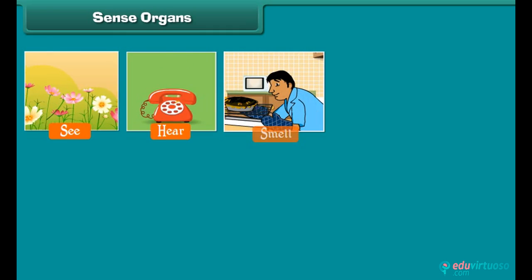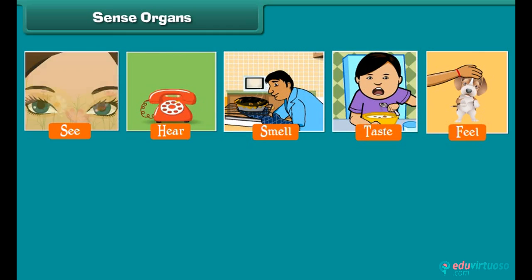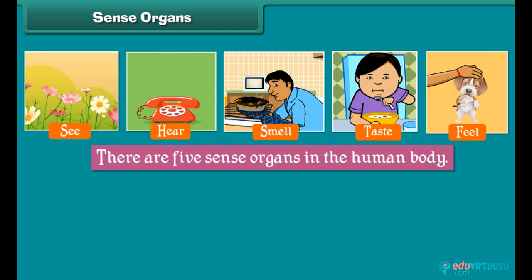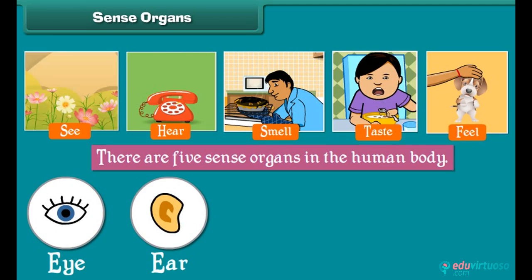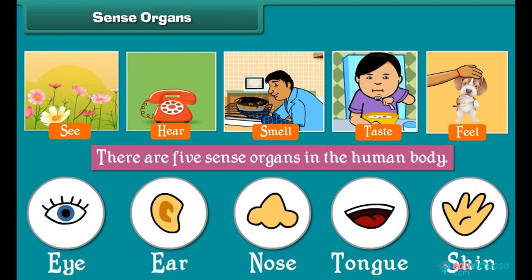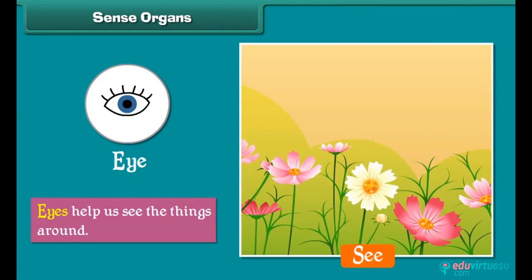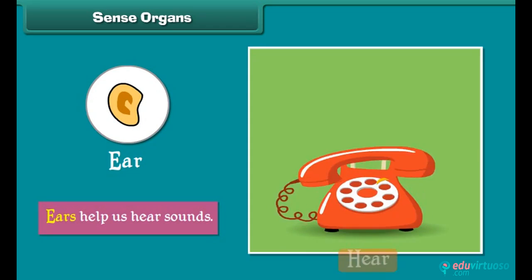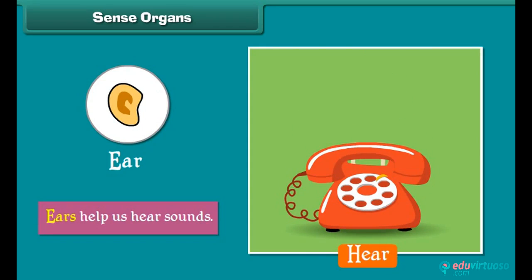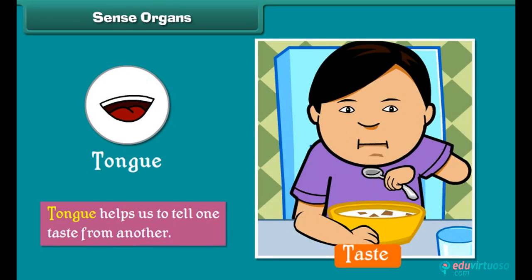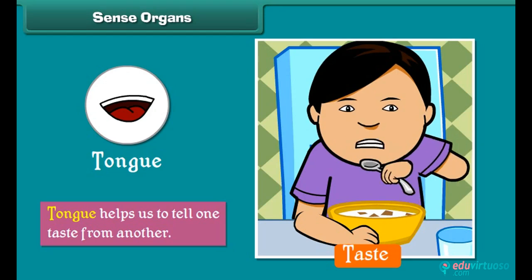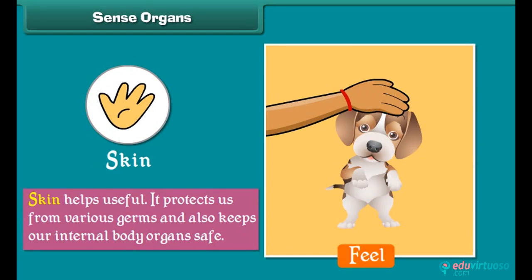The organs that help us to see, hear, smell, taste, and feel are called sense organs. There are five sense organs in the human body: eyes, ears, nose, tongue, and skin. Eyes help us to see things around us; ears help us to hear sounds. Nose helps us to breathe and smell; tongue helps us to tell one taste from another. Skin protects us from various germs and also keeps our internal body organs safe.